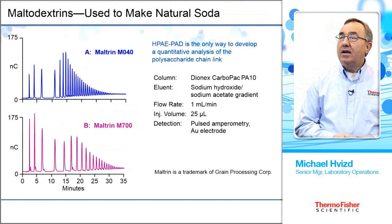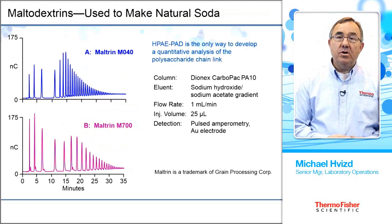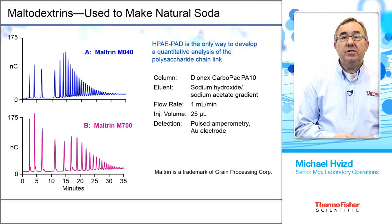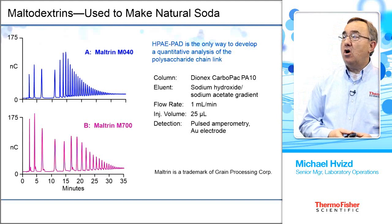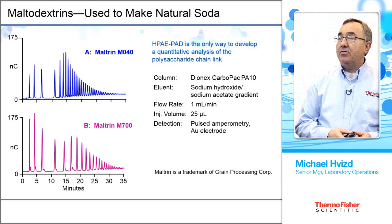The Carbopac PA20 column uses a smaller particle size as well as a smaller diameter column, so we achieve faster separations and better resolution than was previously available. This slide shows a gradient separation of the maltodextrins — glucose oligomers. Going from left to right, the first peak is glucose, next is maltose, and we keep adding glucoses as we go. The top chromatogram shows out to DP 50 — a chain of 50 glucose molecules. It uses a sodium hydroxide/sodium acetate gradient, done on the Carbopac PA10 column.